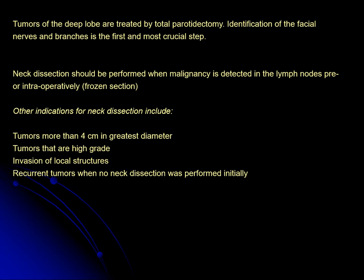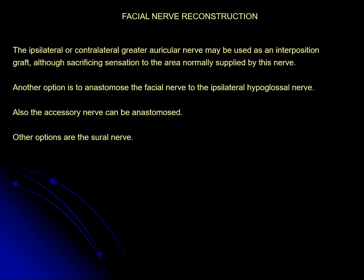Indications for total parotidectomy include tumors greater than 4 cm, high-grade tumors, invasion of local structures, and recurrent tumors. Facial nerve reconstruction is very important if the nerve is sacrificed; interposition grafts using the sural nerve are used. Other options include the hypoglossal nerve or accessory nerve, and other oral nerve grafts.